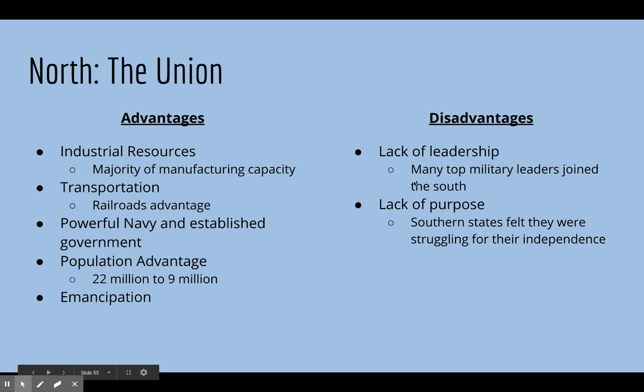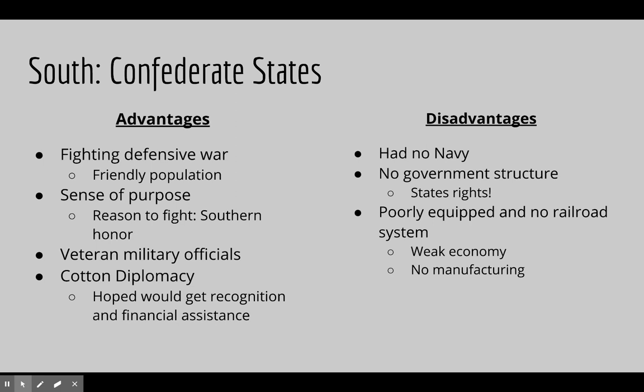The other big disadvantage was the lack of purpose. The Southern states felt unified in their fight for independence and their defense of slavery. In the Union, not everybody was opposed to slavery in the South, so they didn't all feel the same about the purpose of the war. On the other side, the South's big advantage was fighting a defensive war — the entire population of the South was relatively friendly, and most major battles occurred in the South.